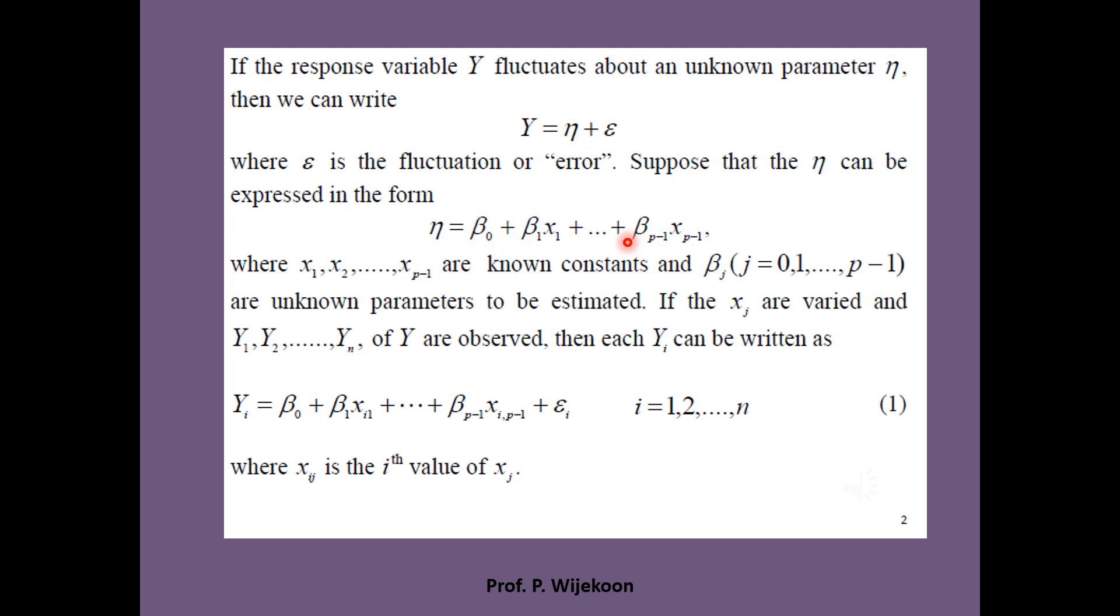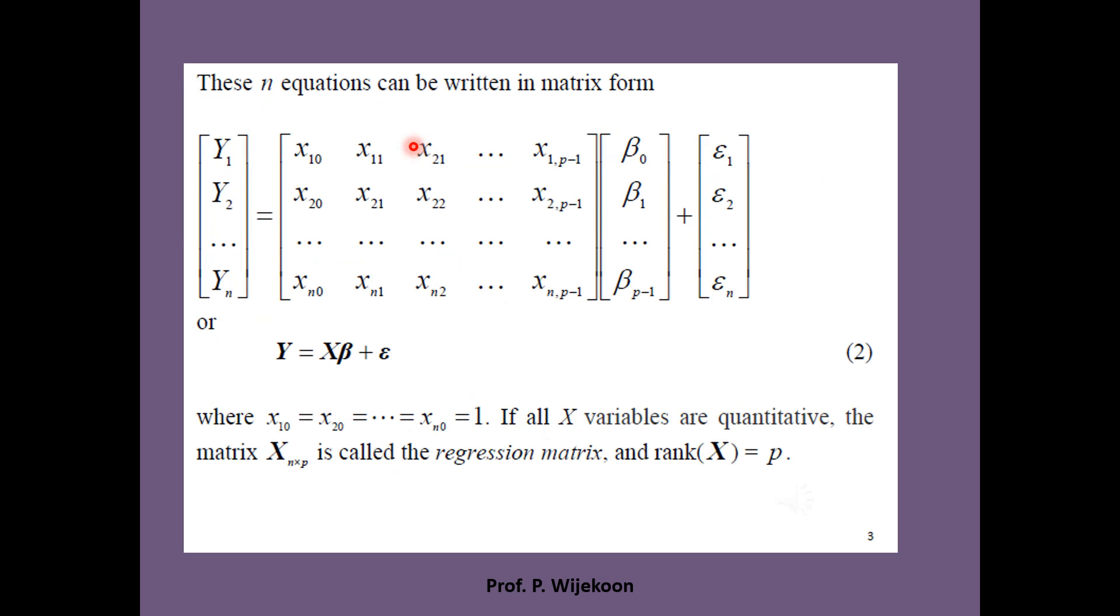Assume that we can express y equals eta in terms of x variables as given in this expression. Here x1, x2, up to xp-1 are non-constants and beta values represent unknown parameters to be estimated. Note that when x variables are varied and y1, y2, up to yn are observed, then each yi can be written according to this equation.